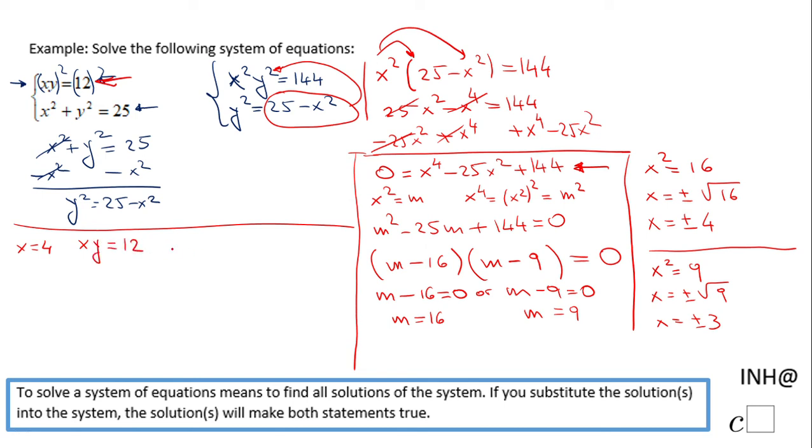So that basically tells us that 4y equals 12, which gives us y equals 3. So the first solution will be 4 and 3.